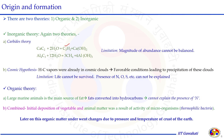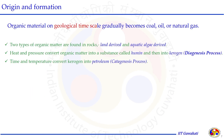The organic theory is the most widely accepted theory. Large marine animals are the main source of fat, which got converted into hydrocarbons. But this hypothesis cannot explain the presence of nitrogen. A more comprehensive approach — the combined organic theory — proposes that initial deposition of vegetable and animal matter was the result of activity of microorganisms called thermophilic bacteria. Later, this organic matter deposited underneath the surface went through pressure and temperature profiles and converted into hydrocarbon fluid, gradually converting into coal, oil and natural gas over geological time.